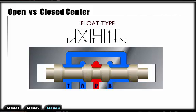This float-type configuration blocks P while interconnecting A and B ports to T. Because P is blocked, the circuit becomes closed center. This center type is commonly used in parallel circuits where we are freewheeling a hydraulic motor in neutral.